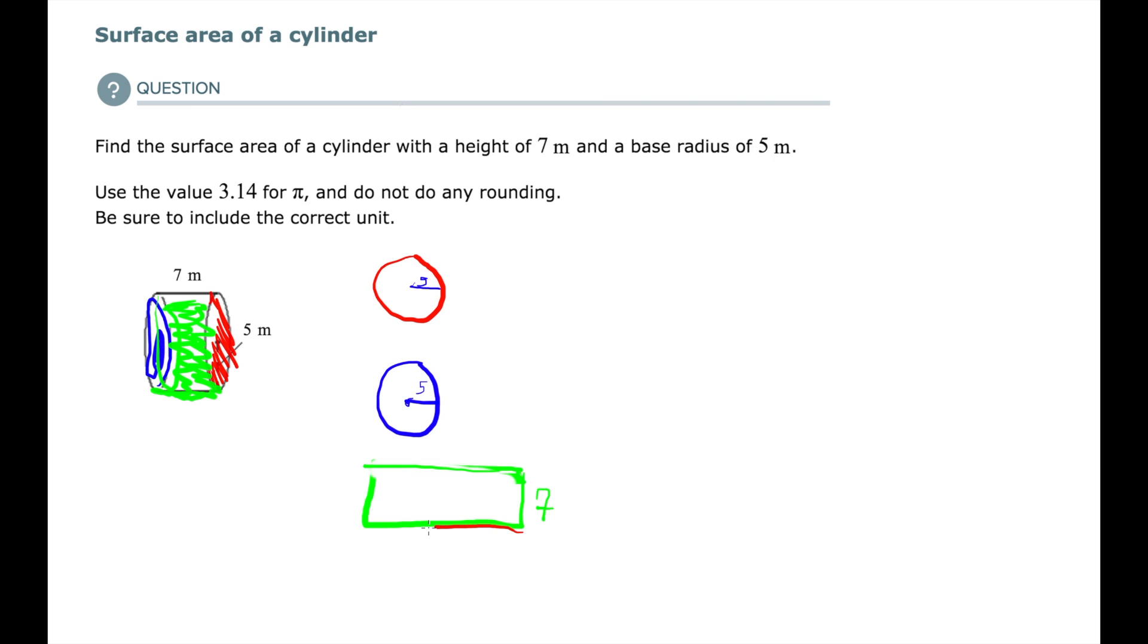The one dimension that is not given to us in the problem is the width of my label. And if you imagine this, the label goes around the circle. The label goes around the circle.